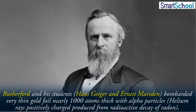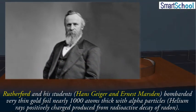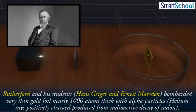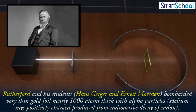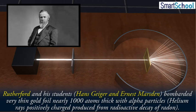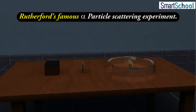Rutherford and his students Hans Geiger and Ernest Marsden bombarded very thin gold foil nearly 1000 atoms thick with alpha particles or helium rays positively charged produced from radioactive decay of radon.